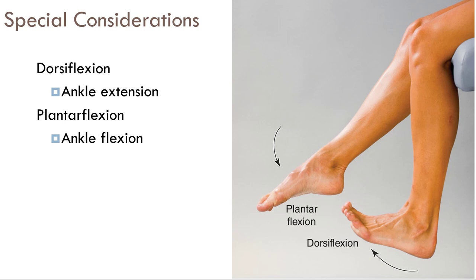Ankle movement is another confusing area. About 75% of textbooks correctly label one position as ankle extension, while 25% incorrectly call it ankle flexion. Rather than debating extension versus flexion at the ankle, we use the terms dorsiflexion — where the dorsal surface (top of the foot) moves closer to the shin — and plantar flexion — where the plantar surface (bottom of the foot) moves closer to the calf. This is much clearer and avoids ongoing debate.